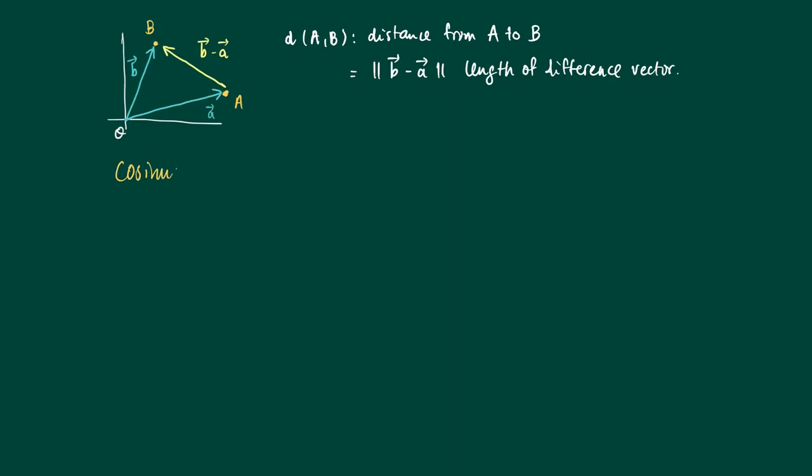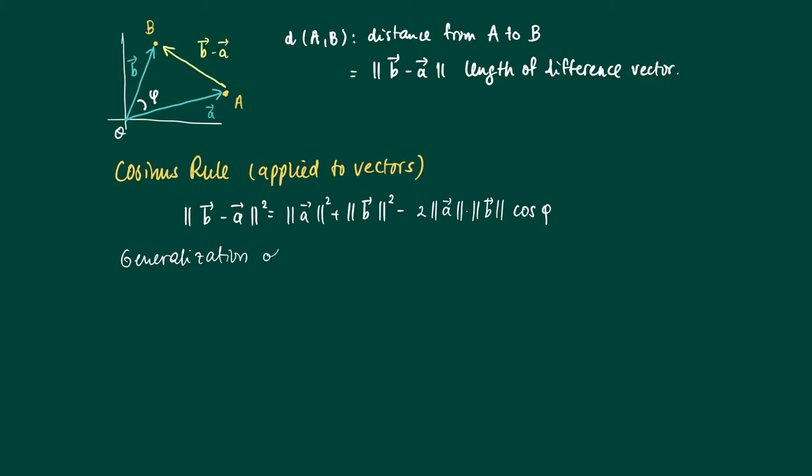Now let us apply the cosine rule to this triangle we have here, with the origin, A, and B. We write the angle phi as the angle between the vectors a and b. Then we get that ||b - a||² equals ||a||² plus ||b||² minus 2||a|| ||b|| cos(φ). This is just what the cosine rule says for this picture, a generalization of Pythagoras.